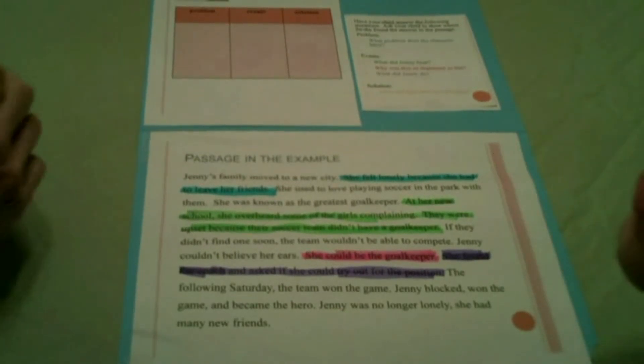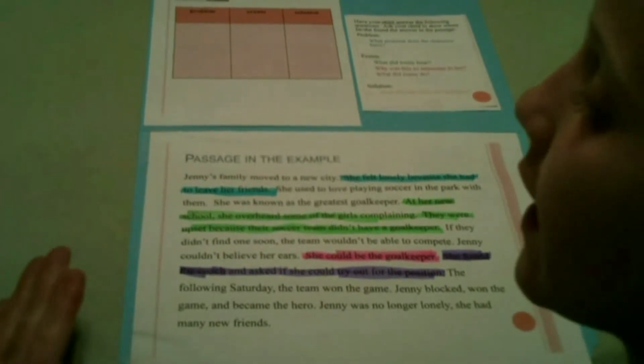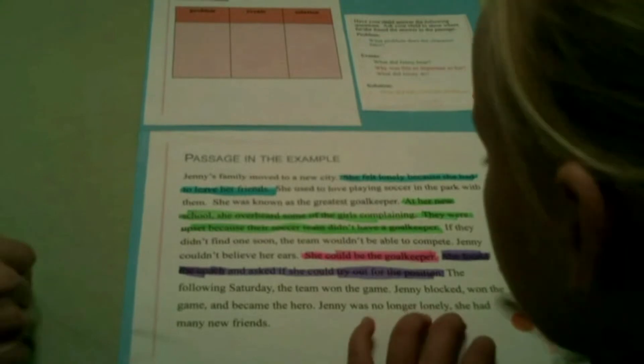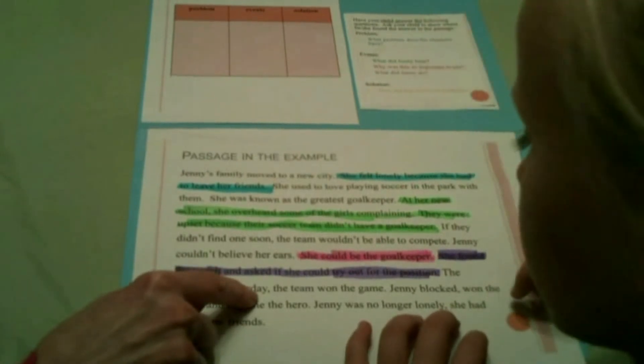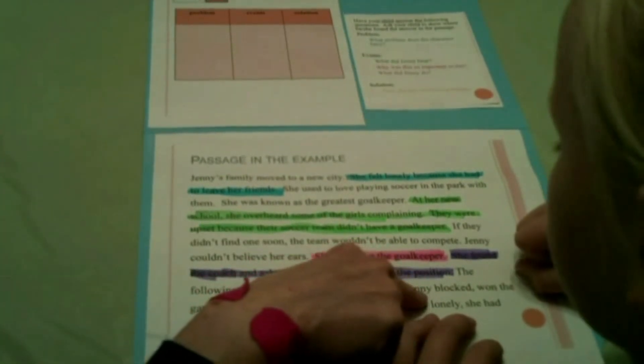How did she solve her problem? She made new friends because she helped the team win the game. Let's find that information about winning the game in the passage: The following Saturday, the team won the game. Jenny blocked, won the game, and became the hero. That tells exactly what she did — she blocked, won the game, and became the hero.